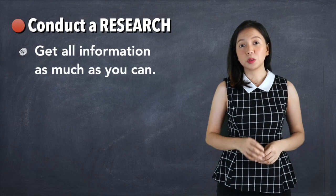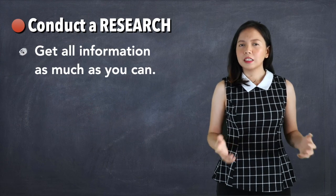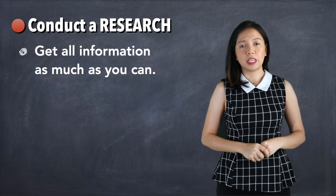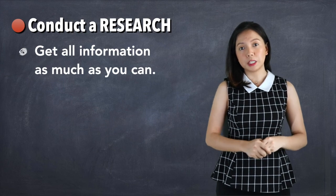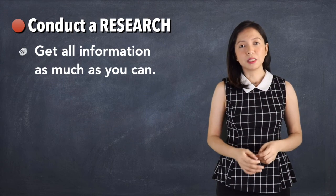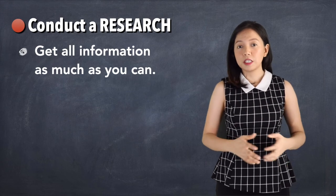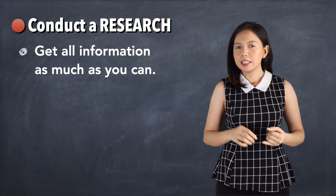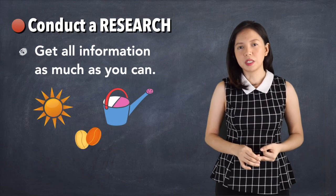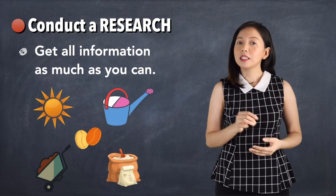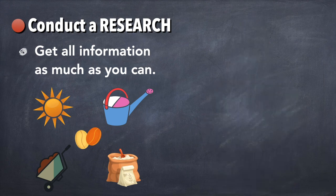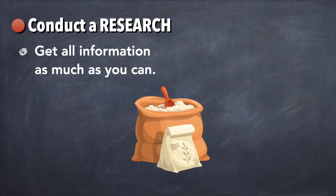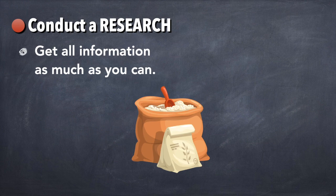The second step is to conduct a research. Get all information as much as you can. This will further give you direction on how you are going to conduct your experiment. In our example about seeds, the factors that affect their growth are seed type, amount of water, amount of sunlight, soil type, type of fertilizer, among many others. Suppose among these factors, you decide to investigate the amount of fertilizer that would make the seeds grow faster.